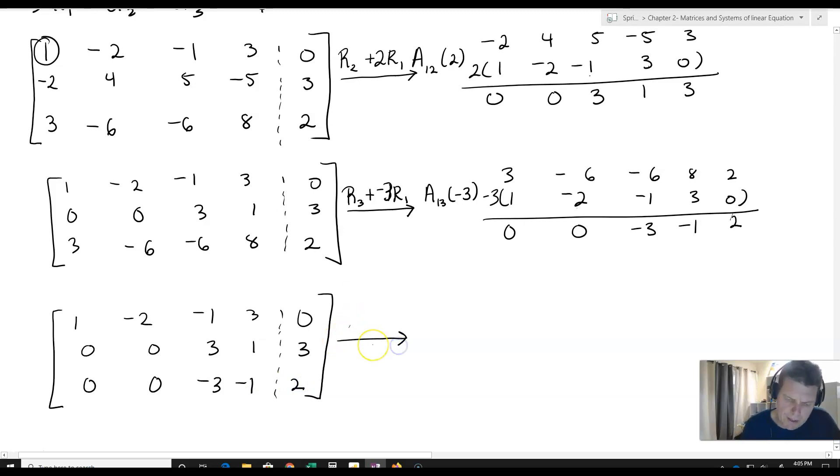So now I want to notice I've accomplished most of what I wanted. I got a 1 here and zeros below it. I want to get a 1 as far over as possible in the next row. But I notice that this 3 and -3 are the same magnitude. To make things quicker, before I divide through, I'll take row 3 and add row 2. So 0, 0, -3, -1, 2 plus 0, 0, 3, 1, 3 gives me 0, 0, 0, 0, 5.